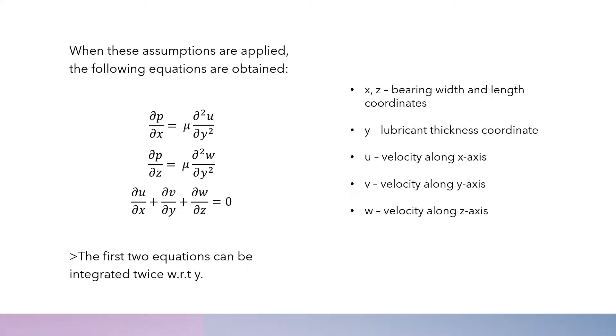In these equations, X and Z are the bearing width and length coordinates. Y is the lubricant thickness coordinate. U is the velocity along the X axis, V is the velocity along the Y axis, and W is the velocity along the Z axis. These first two equations can be integrated twice with respect to Y, which will help us solve for the general Reynolds equation.